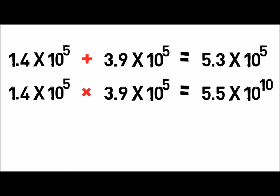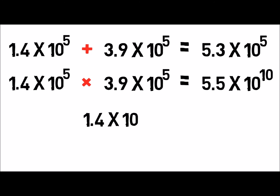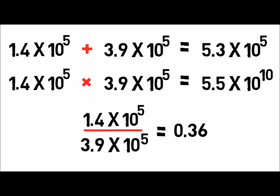When dividing numbers in scientific notation, write the values out as fractions and divide the coefficients. Then subtract the exponent in the denominator from the exponent in the numerator.